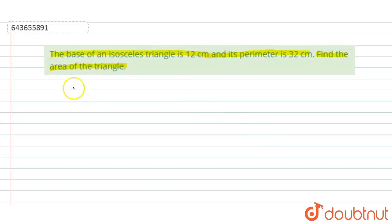So first of all, let us make a rough diagram for this question. Let us draw an isosceles triangle. In an isosceles triangle two sides are equal, so we can take this triangle as triangle ABC where this base BC is given as 12 centimeter and the perimeter is 32 centimeter.